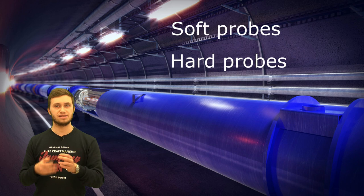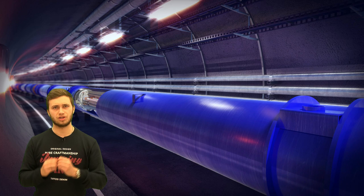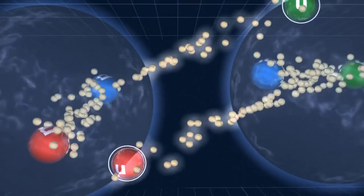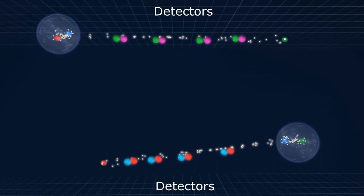For the sake of this work, we shall focus on one type of hard probes called jets. After a hard scattering, highly energetic particles are produced, and during their propagation, they radiate other particles like gluons or quarks into a cone-shaped shower that will spread over the detectors.